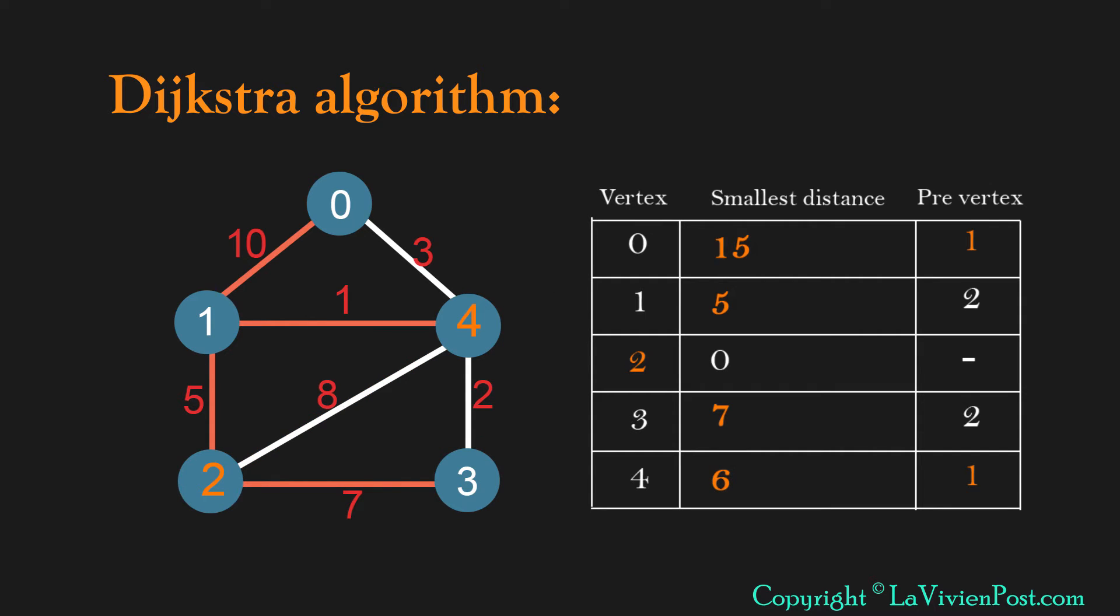After execution, we can update the table to the new values. We update the third column with 1 if we can get a smaller value through vertex 1 to that vertex. Since all vertices have been reached, we can conclude the result. From source vertex 2 to destination 4, the shortest distance is 6.